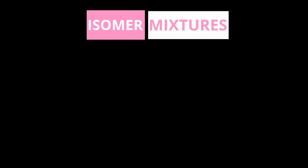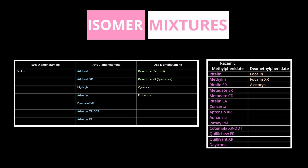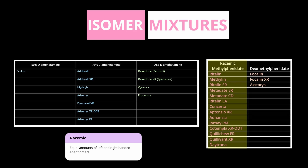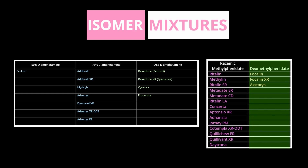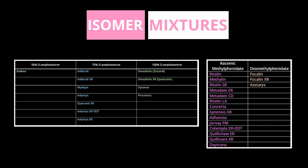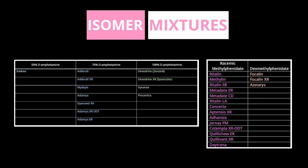Even though all these different stimulants have a ton of different names and release mechanisms, they all end up being D and L amphetamine or D and L methylphenidate. Methylphenidates come in two different isomer mixes: formulations that come as a racemic mixture — meaning 50% the D enantiomer and 50% the L enantiomer — or formulations that come as just dexmethylphenidate.